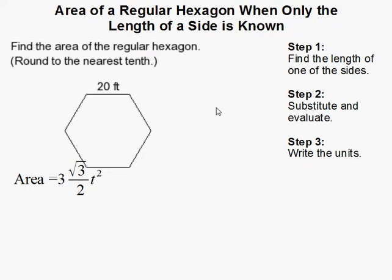I'm going to find the area of a regular hexagon when only the length of the sides is given. Since this is a regular hexagon, as stated up here, we know that every single side is equal.